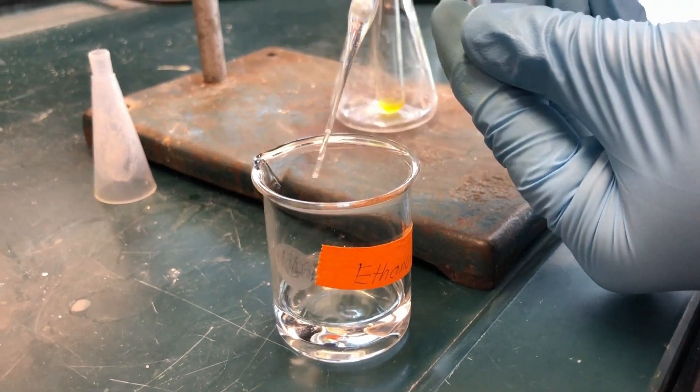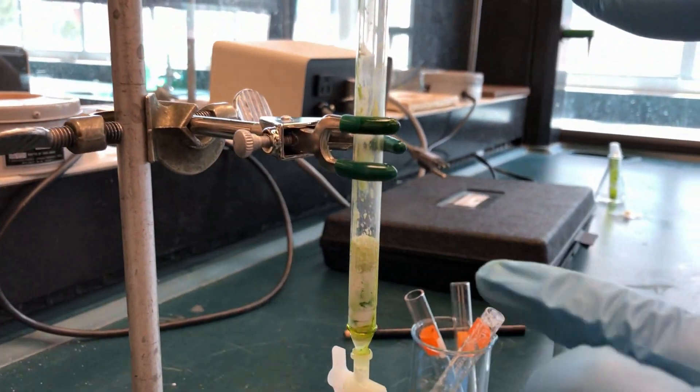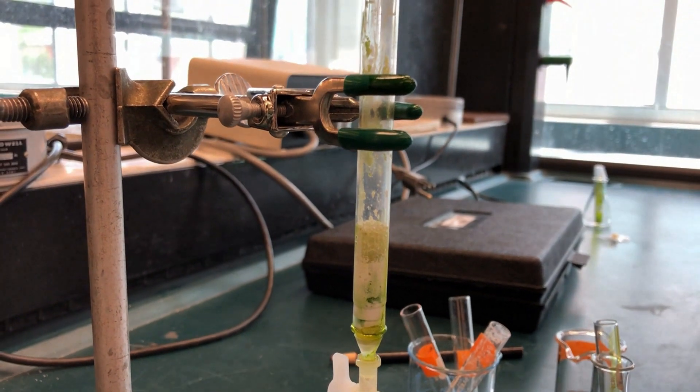If the green band does not move, change to the more polar solvent ethanol. We add ethanol to move the green band down.